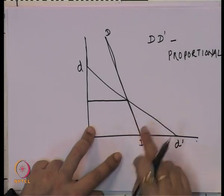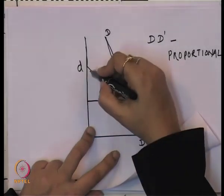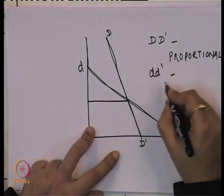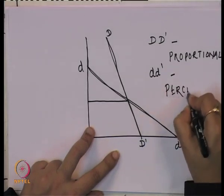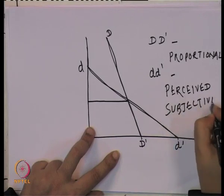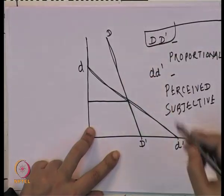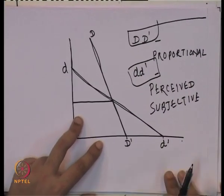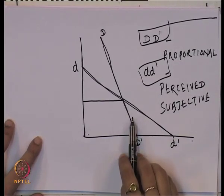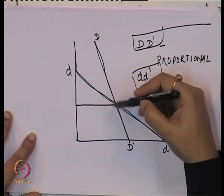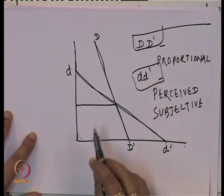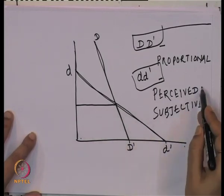The small dd demand curve applies to the case where one firm changes its price and others do not change theirs. This is generally known as the perceived demand curve or subjective demand curve. So, the capital DD is the proportional demand curve and the small dd is the subjective demand curve. The essential difference is: when one firm changes and others follow, we get the proportional demand curve; when one firm changes and others do not follow, we get the perceived or subjective demand curve.